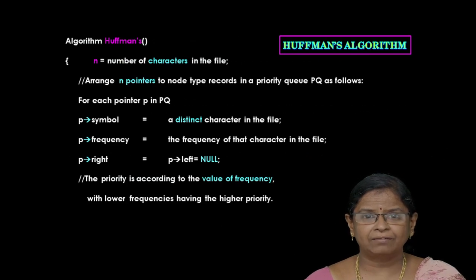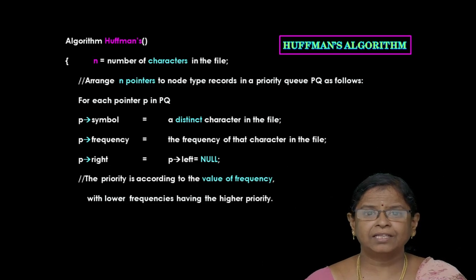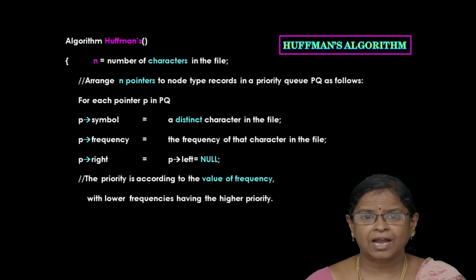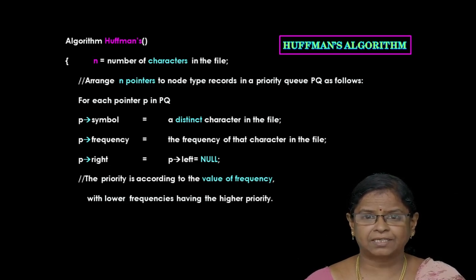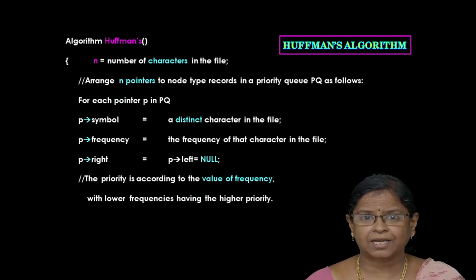Now we will see about the high level version of the algorithm. This algorithm is divided into two sections: the initialization section and the processing section. In the initialization section, n represents the number of unique characters in the file. Each node is represented with four fields: p->symbol (a distinct character in the file), p->frequency (number of times it occurs in the file), and initially the two link fields p->right and p->left are equal to null.